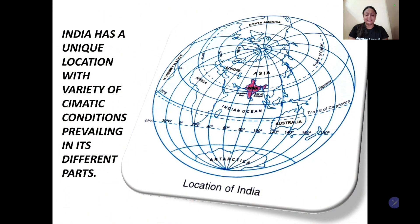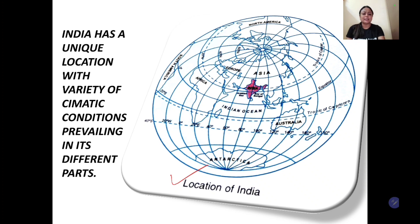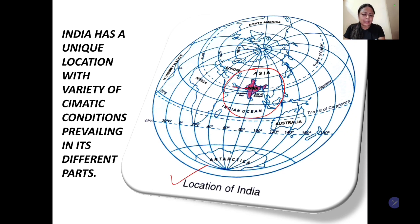So the first factor affecting the climate of India is its location. It is very important that the location of a place affects its climate. The reason is the latitudes passing through that particular place — they have an effect as the different heat zones are there. So if we see, the Tropic of Cancer is passing from the center, so the northern part lies in the temperate zone and the southern part of India lies in the tropical zone.